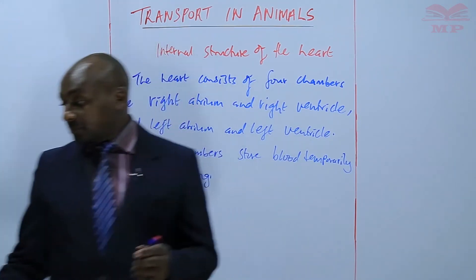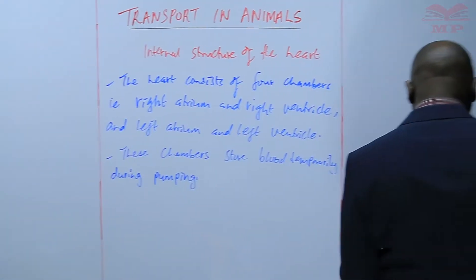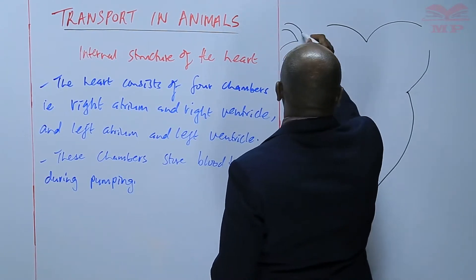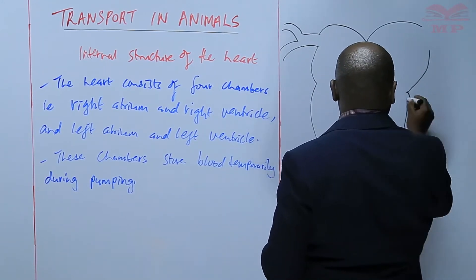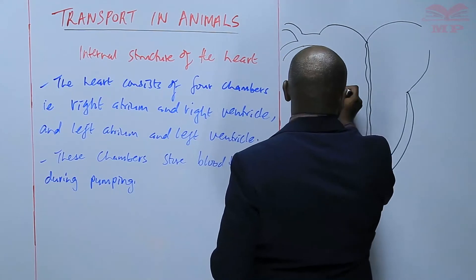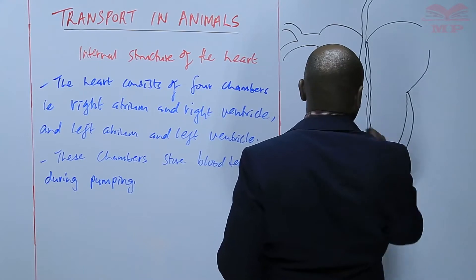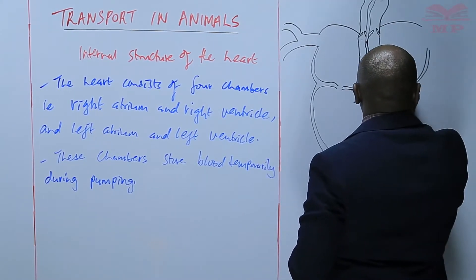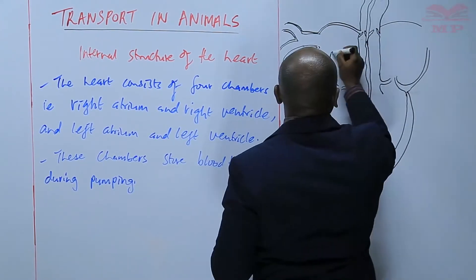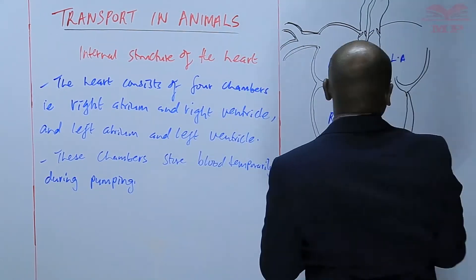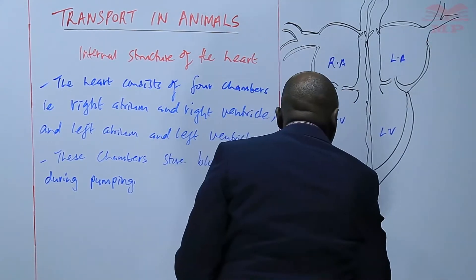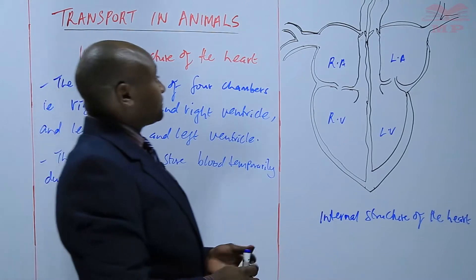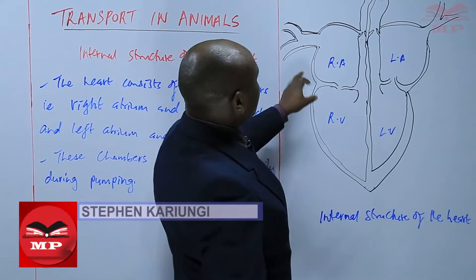Now we are going to look at a diagram showing the internal structure of the heart. Looking at the diagram, we are going to label the parts. There are four chambers as we have mentioned.